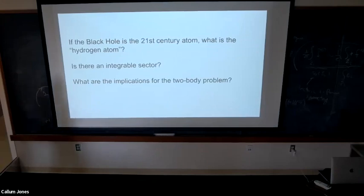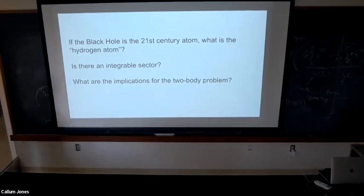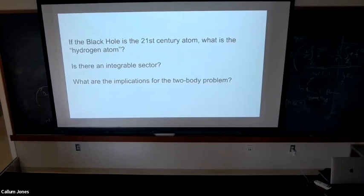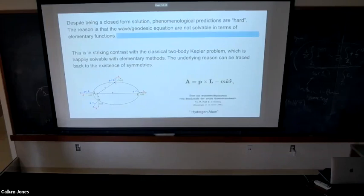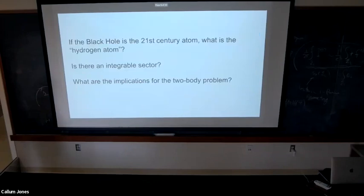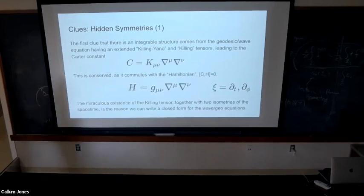Since the black hole is called the 21st century atom, it's convenient to ask: what is the hydrogen atom analog here? What is the textbook example that we can solve exactly, without any approximation? That question resonates with the existence of a one-theta sector, because in the Kepler problem the reason for exact solvability was a hidden symmetry realized by the LRL vector. So perhaps there's some notion of integrability also in GR. And if we know this toy model, we can ask about its phenomenological implications.